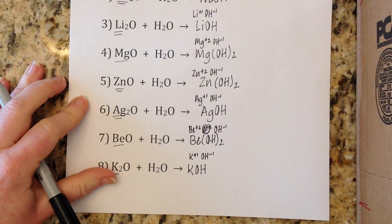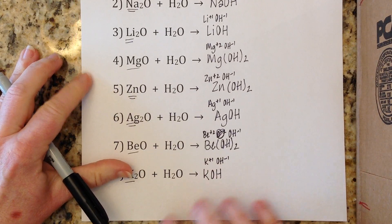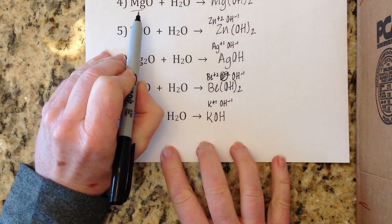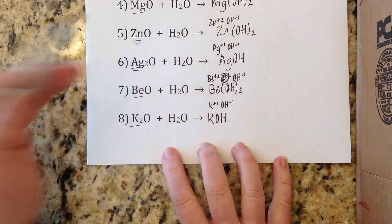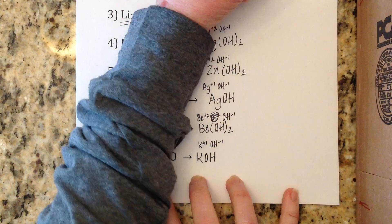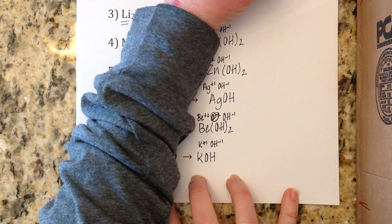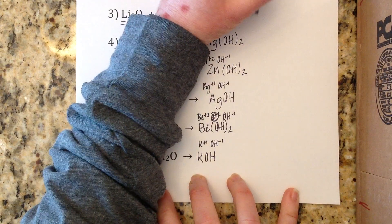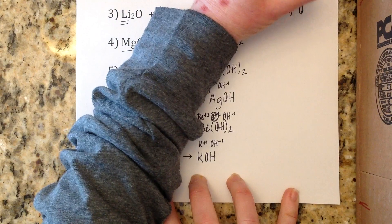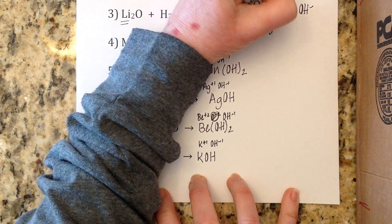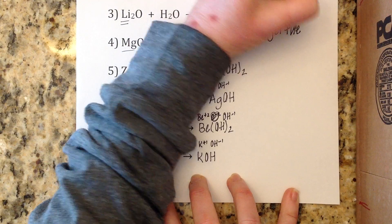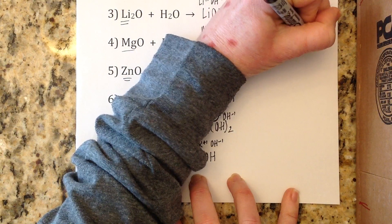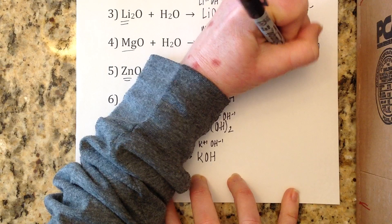The key note for metal oxide-water synthesis reactions: whatever metal was attached to the oxygen is what you crisscross with hydroxide. The clue is to crisscross the metal with hydroxide to get the product, which is always a base.